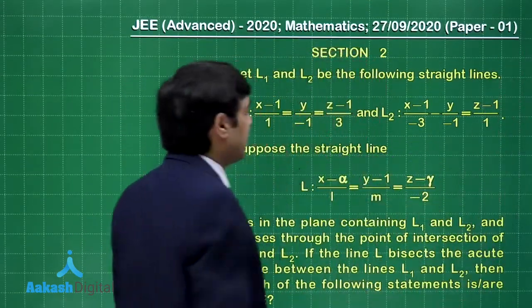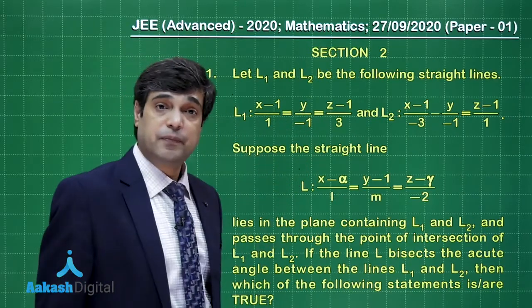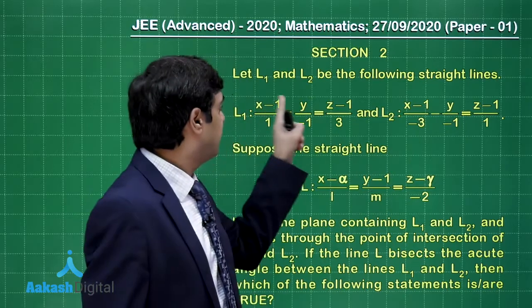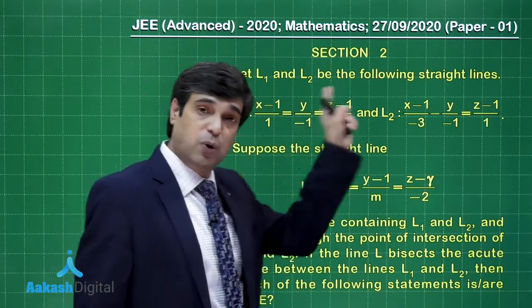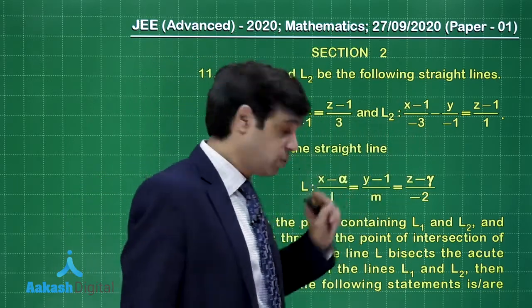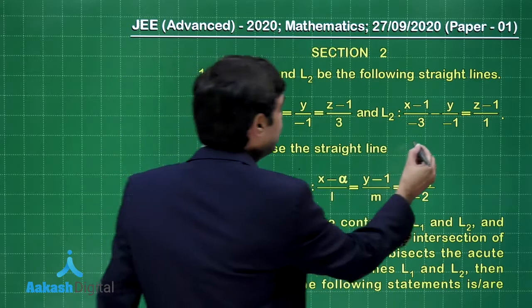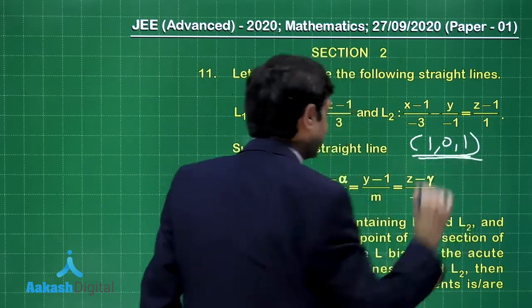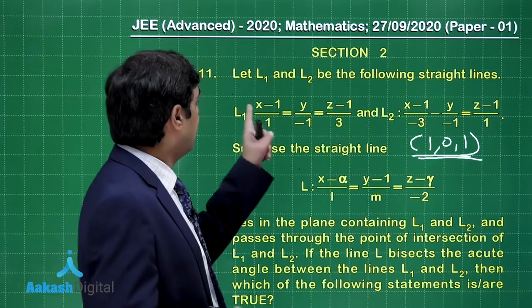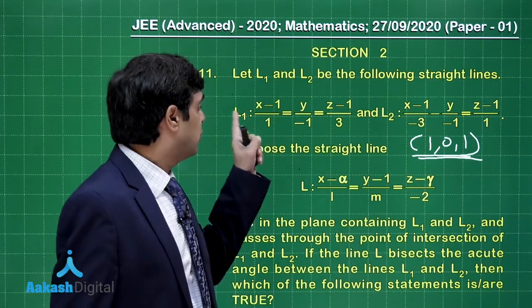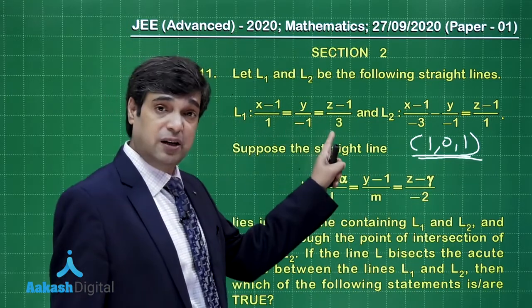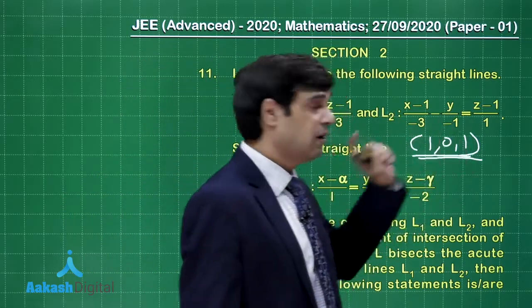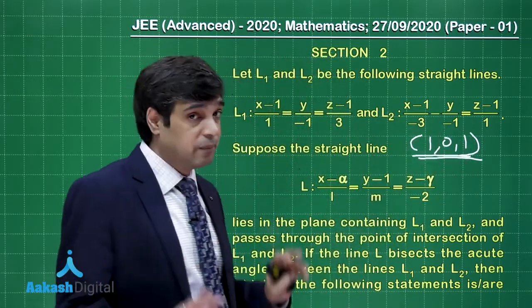Observing the two lines, we can clearly see they intersect at the point (1, 0, 1) since both lines pass through that point. So the point of intersection is (1, 0, 1). This line l1 has direction ratios 1, −1, 3 while l2 has direction ratios −3, −1, 1.